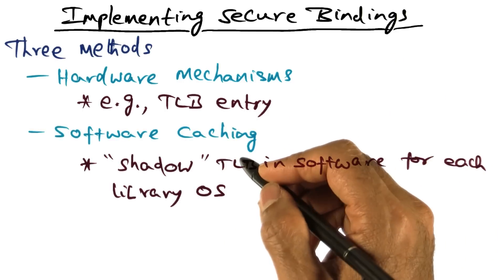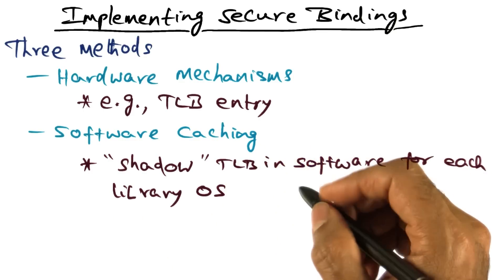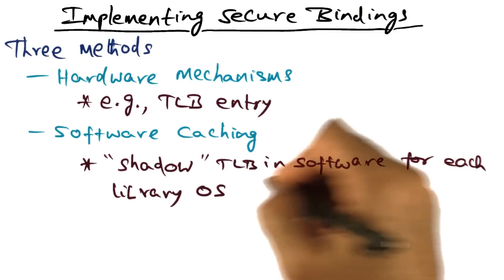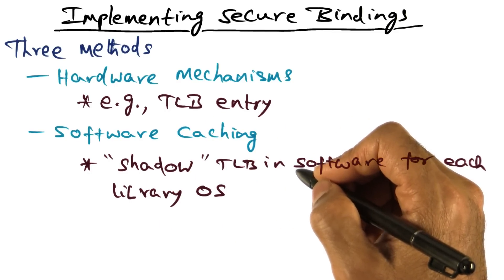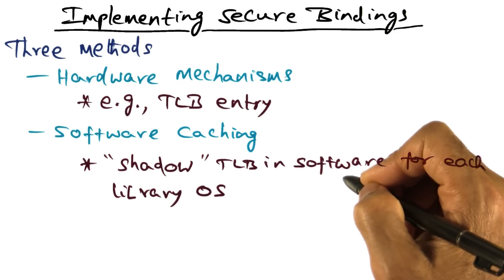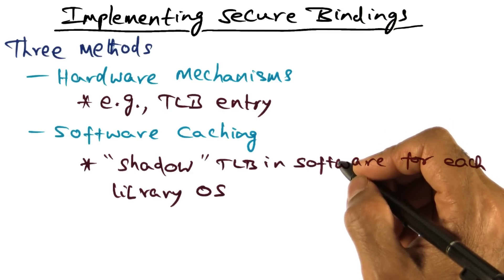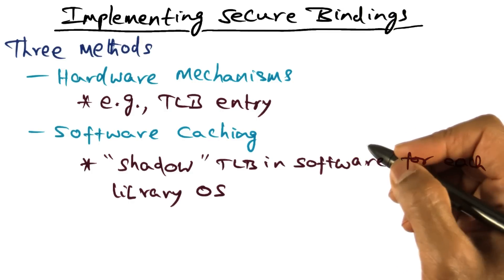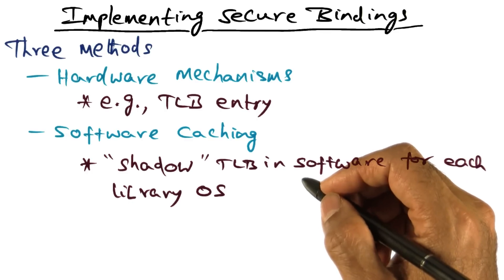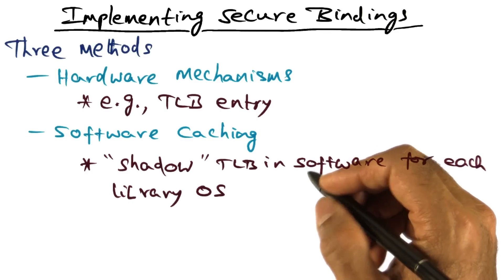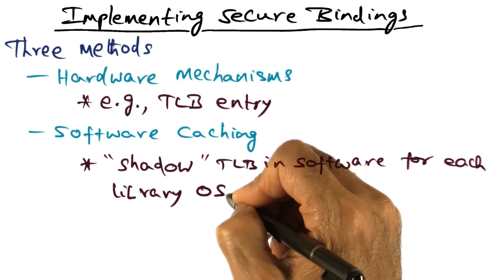The second mechanism that exo-kernel has is software caching on behalf of each library operating system. Specifically, the shadow TLB — caching the hardware TLB in a software cache for each library operating system — is to avoid the context switch penalty when exo-kernel switches from one library operating system to another. At the point of context switch, exo-kernel will dump the hardware TLB into a software TLB data structure associated with that specific library operating system.